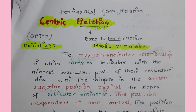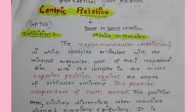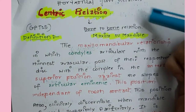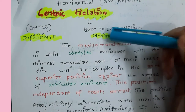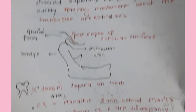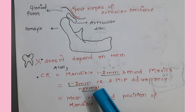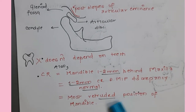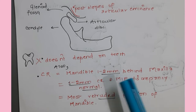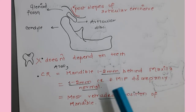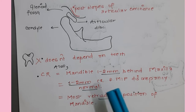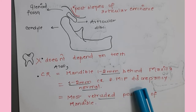Centric relation is the bone-to-bone relation, independent of teeth - there is no contact of teeth. It is the relationship of maxilla and mandible. In simpler words, it is the most retruded position of the mandible, or the mandible is 1-2 mm behind the maxilla - there is a discrepancy of about 1-2 mm between centric relation and maximum intercuspation.